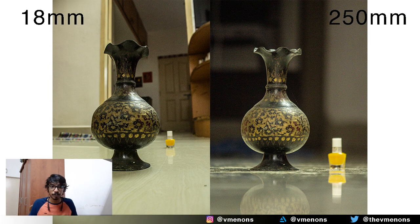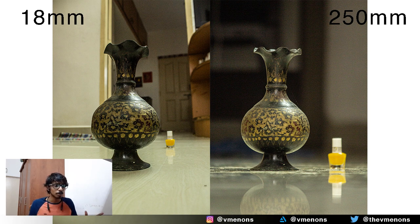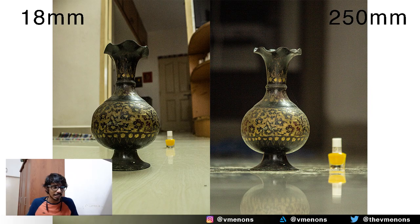An example for depth of field would be this image. Notice how in the second image shot at 250 millimeters there is so much more blur in the background when compared to the first image on the left which was shot at 18 millimeters.